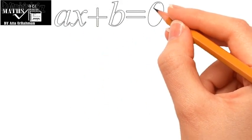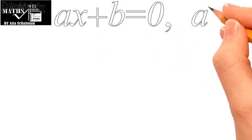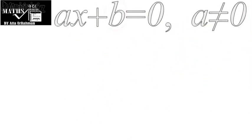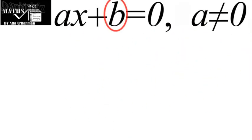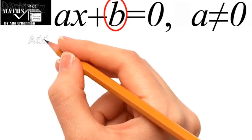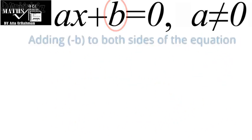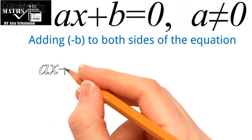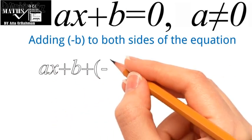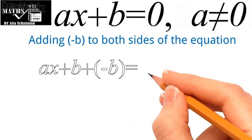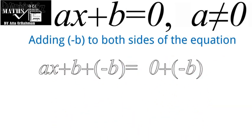Now moving toward the solution of this linear equation ax plus b equal to zero. What is the first step? We will transfer this b from left to right by adding its additive inverse to both sides of the equation. So doing this we have ax plus b minus b equal to zero plus minus b.